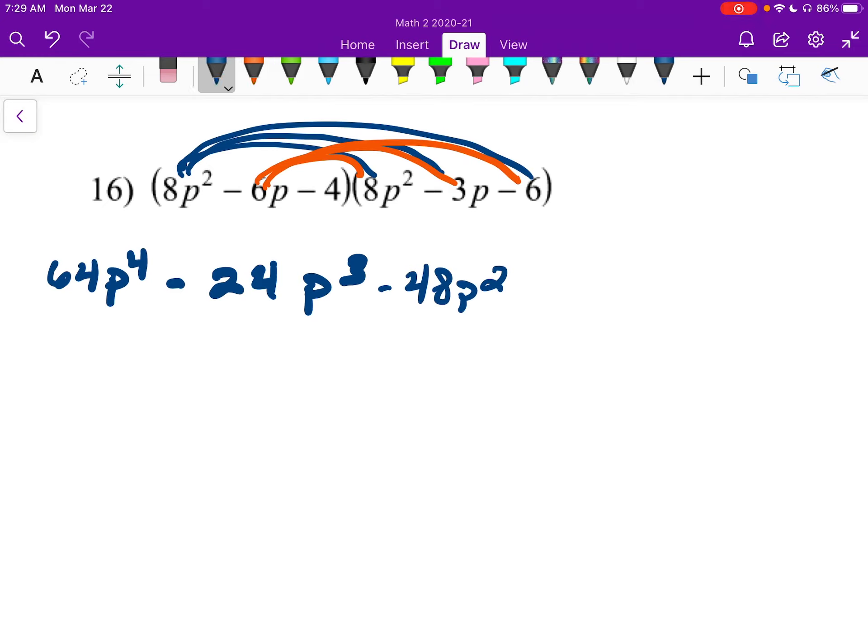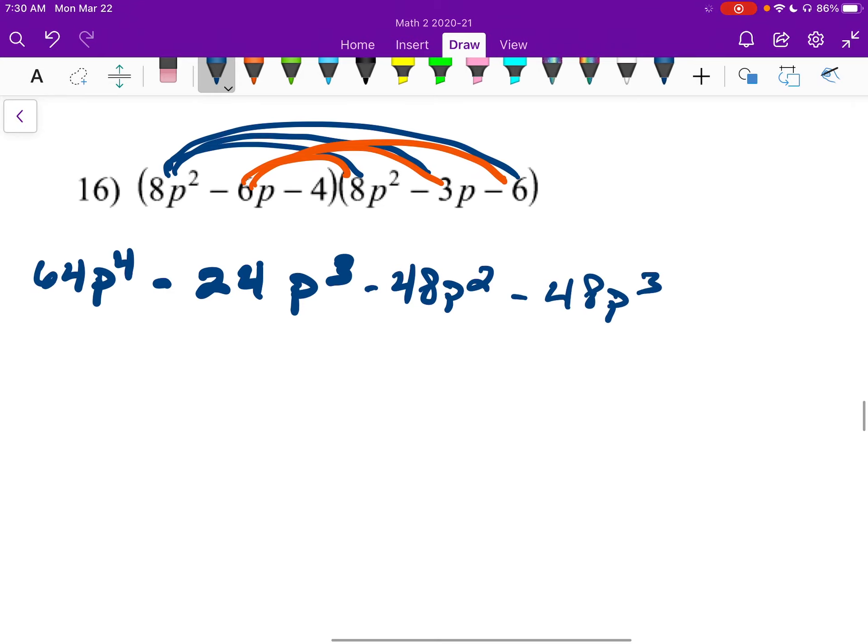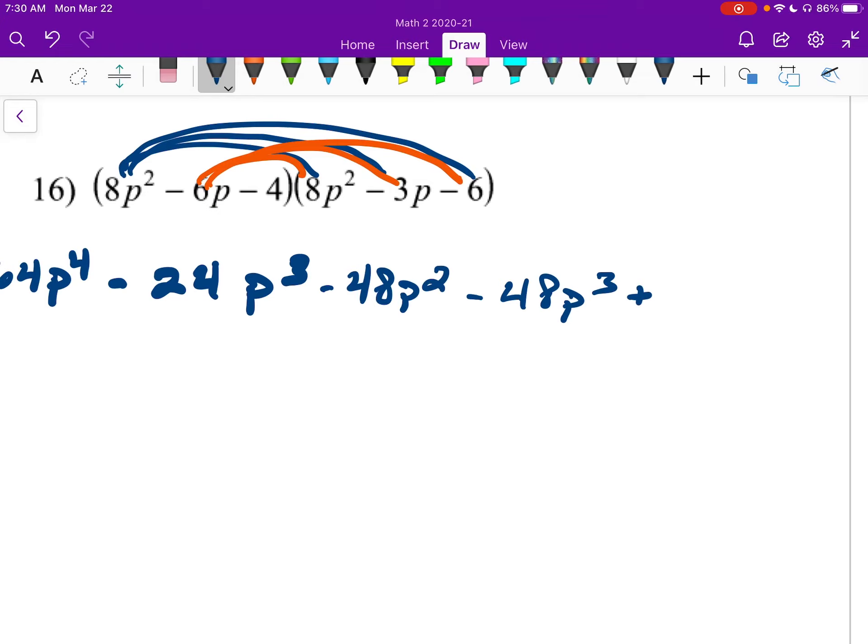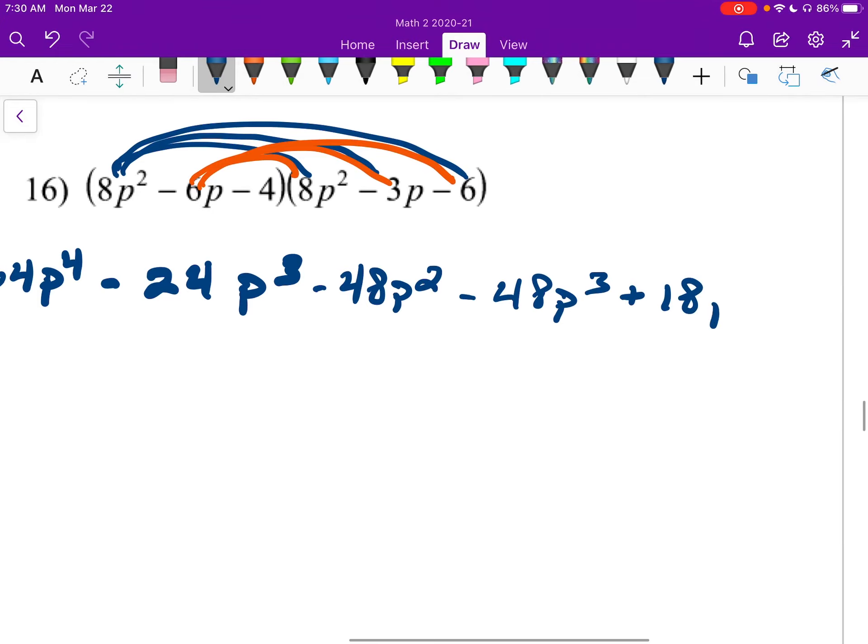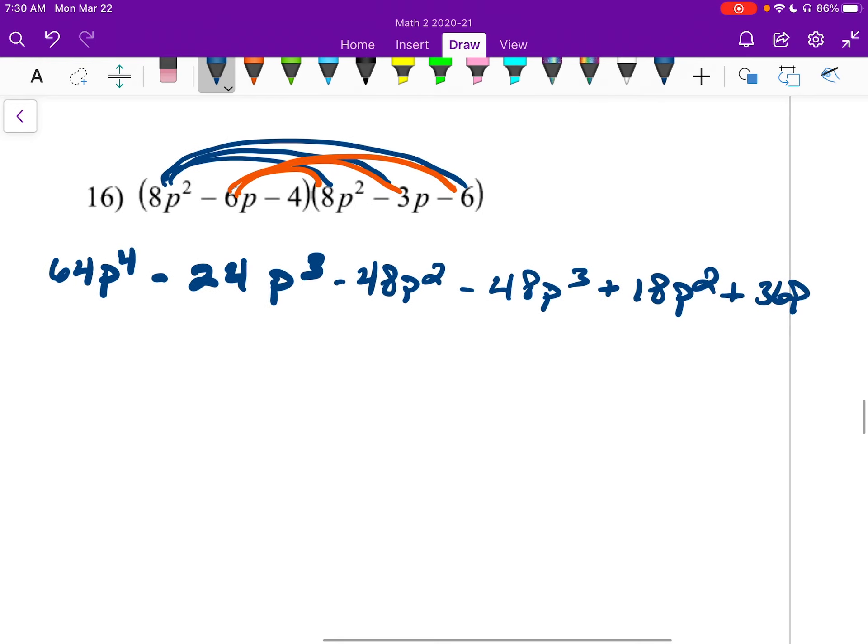Next up, we'll have another negative 6 times 8, which will be another negative 48, but this negative 36p. And I'm going to write these on the line underneath it now. Lastly, I multiply that negative 4. So this will be negative 4 times 8 will be a negative 32p squared plus 12p plus 24.